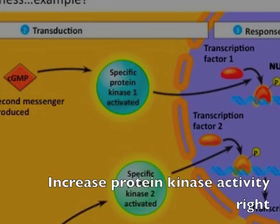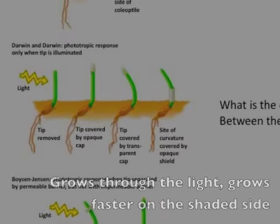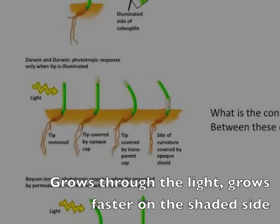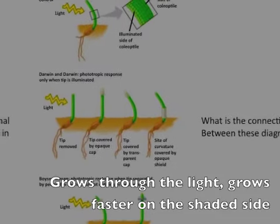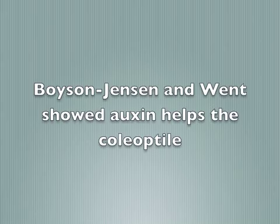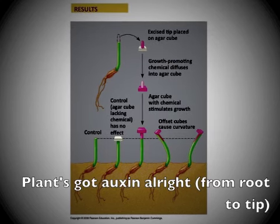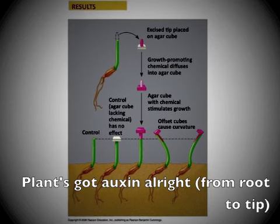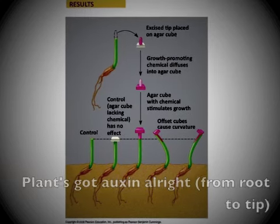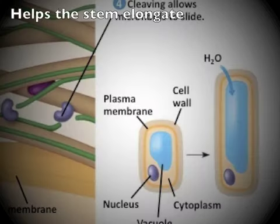Increases protein kinase activity. Light goes fast on the shaded side. Auxin and plant expansins help the coleoptile elongate. They help the coleoptile — helps the stem elongate.